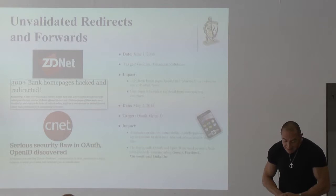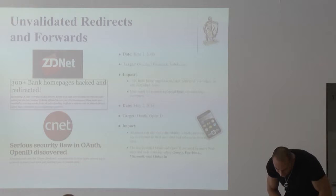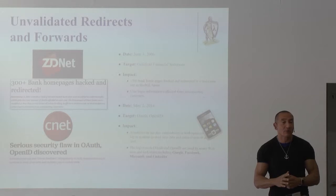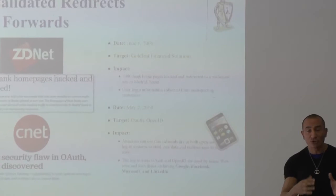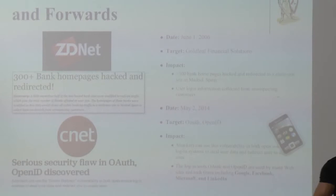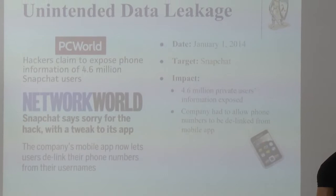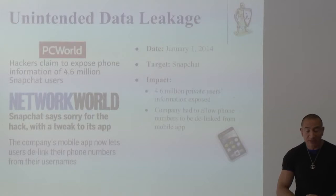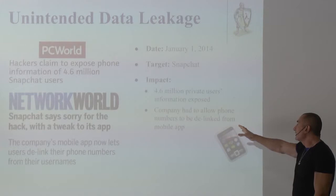In 2006, a company called Gold Leaf was attacked by unvalidated redirection forwards — this is very common. It happens when an attacker redirects a user to a different web page that looks exactly like the one expected, so the user doesn't realize they're on a malicious replica. Two frameworks, OAuth and OpenID, used also in mobile applications, were victims of this attack, meaning any application using those frameworks was vulnerable. Finally, Snapchat was a victim of unintended data leakage, requiring them to delink telephone numbers from the mobile application to prevent a major loss.